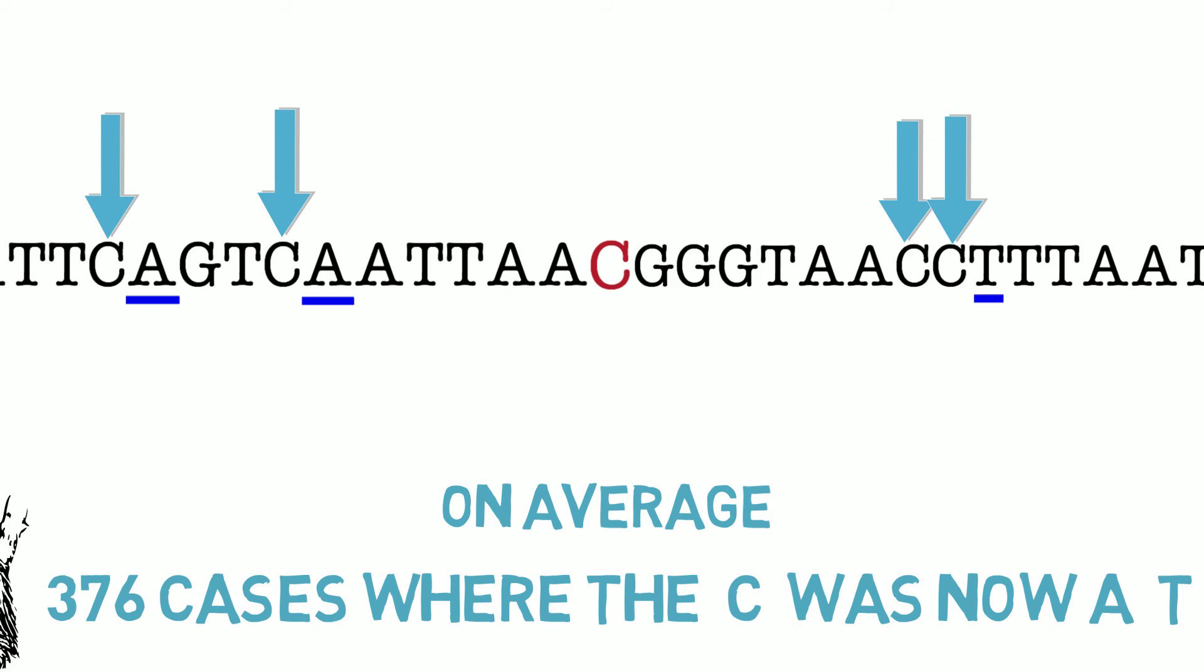If, on the other hand, the changed C had been next to a G, then in that case there was a huge spike: 6,770 cases where chimpanzees and humans differed. 376 versus 6,770 is an 18-fold increase in the amount of difference between chimpanzees and humans at just this one type of C site, the one with a G on its right-hand side.